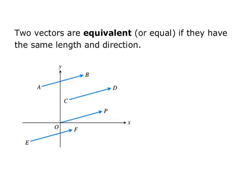Two vectors are equivalent or equal if they have the same length and direction. So here in this figure, we have four different vectors that have the same length and direction, but they're at different points in space. But we would consider each of these vectors equal because they have the same length and direction.